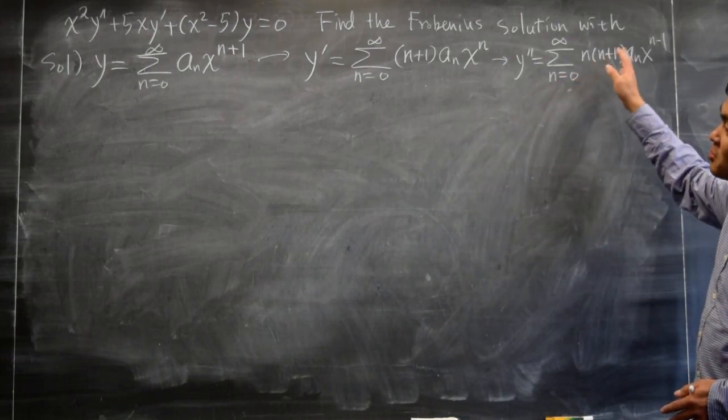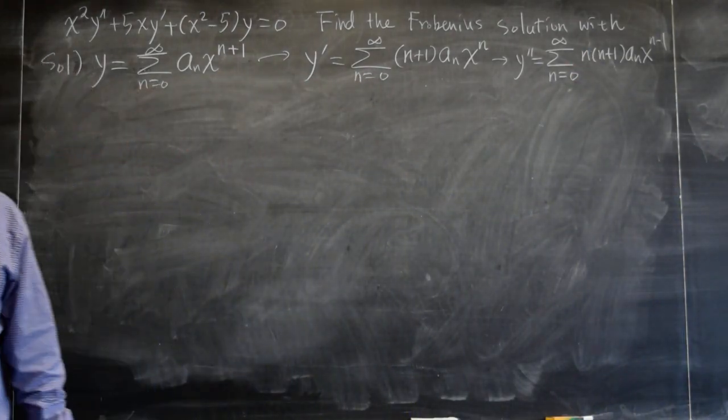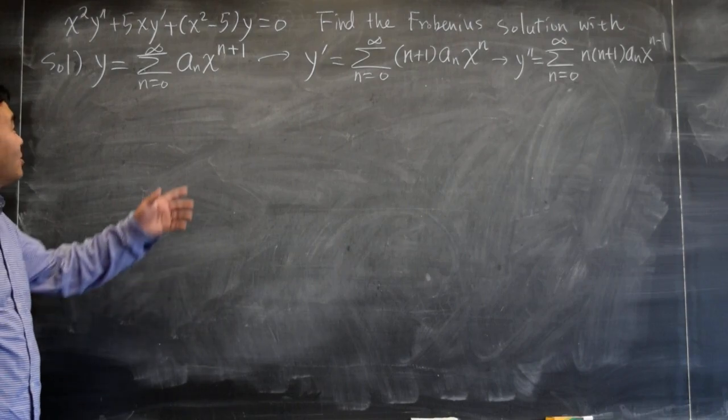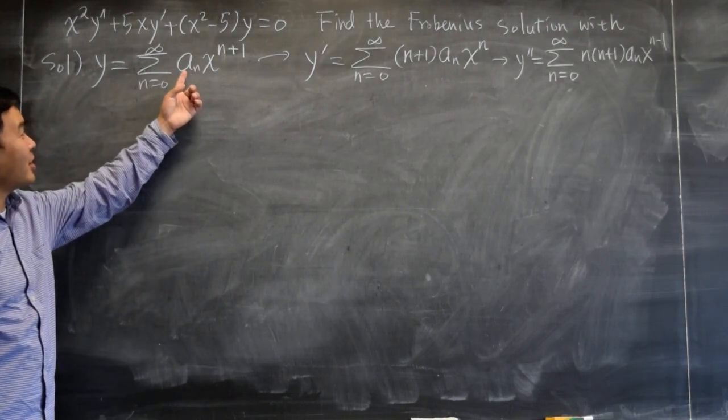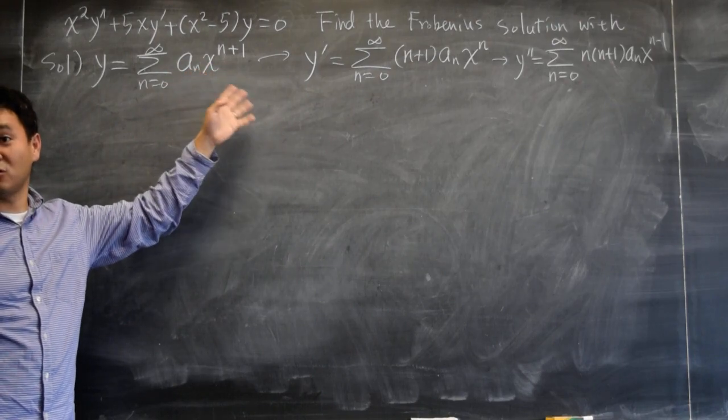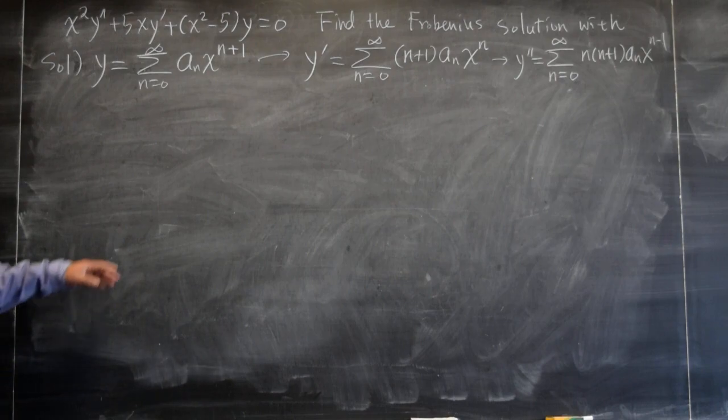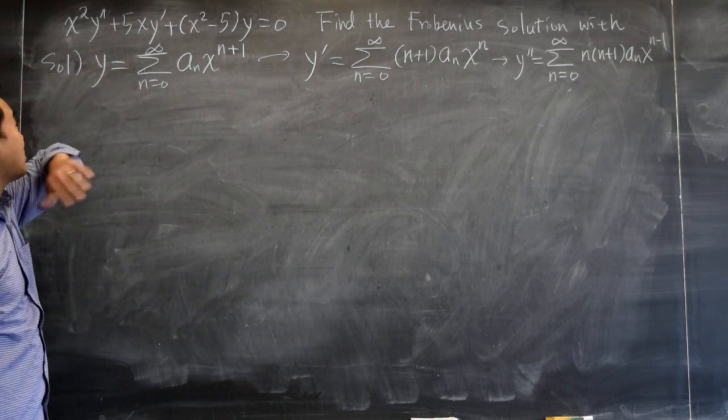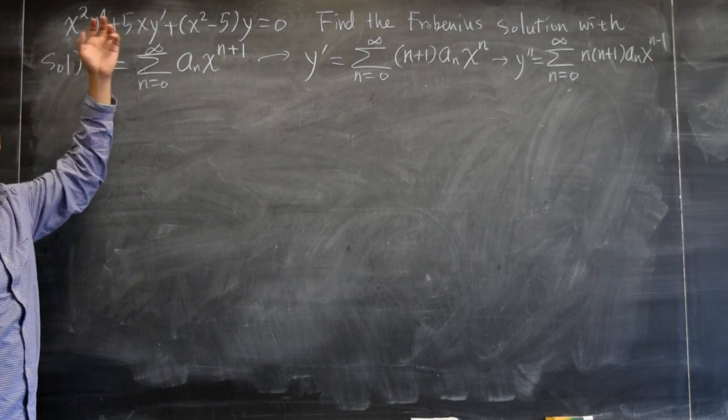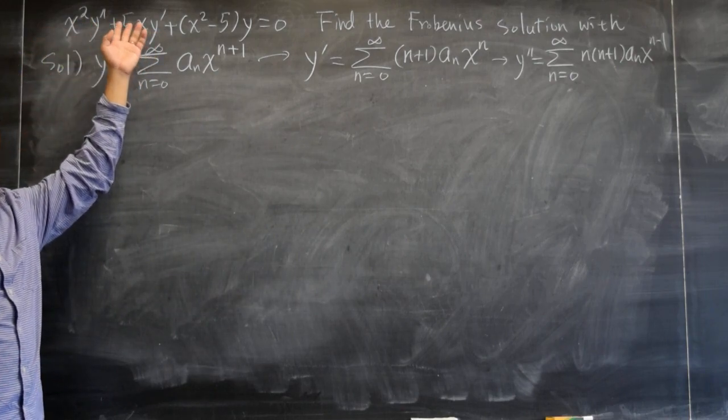But this only happens because this is kind of like a regular ordinary solution. See, this is like a 0x plus a 1x squared, a 2x cubed. So it's a regular power series with the very first term 0 and starting from something times x. And therefore, even if you try to solve this using just a regular power series solution, you will be able to find the solution to this thing.